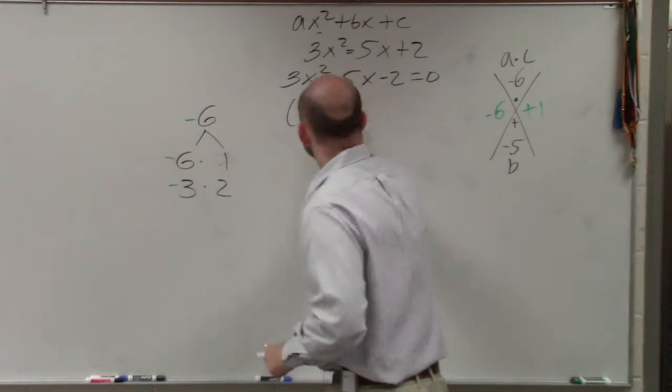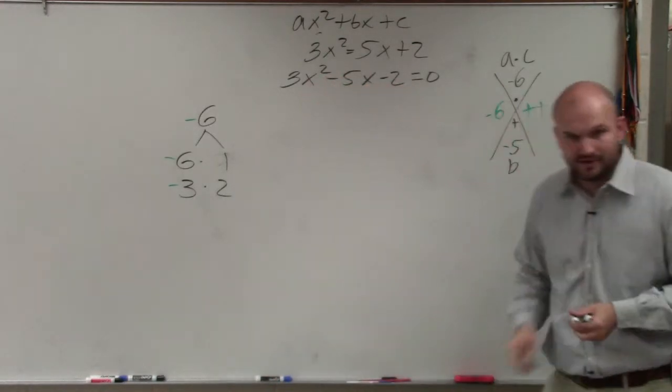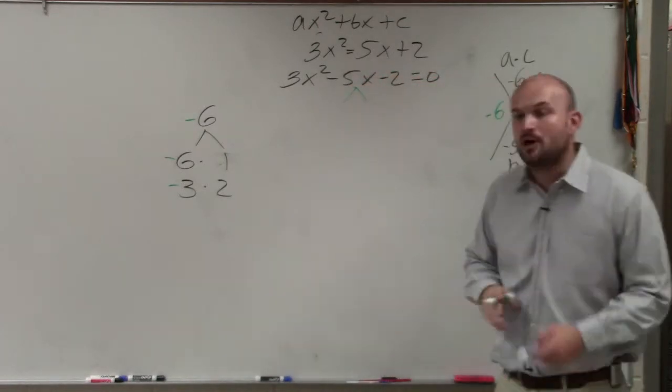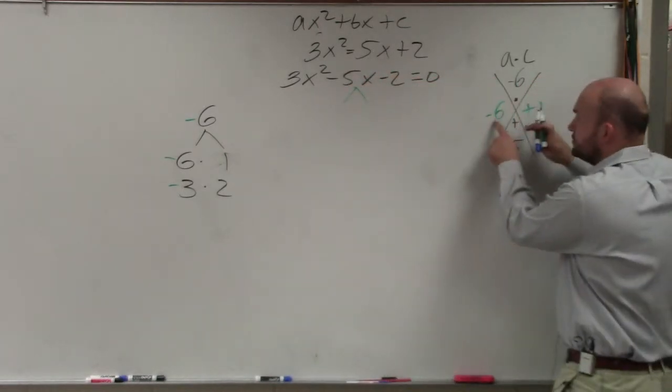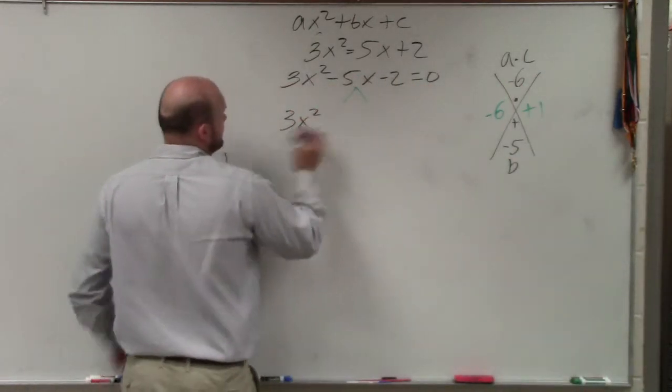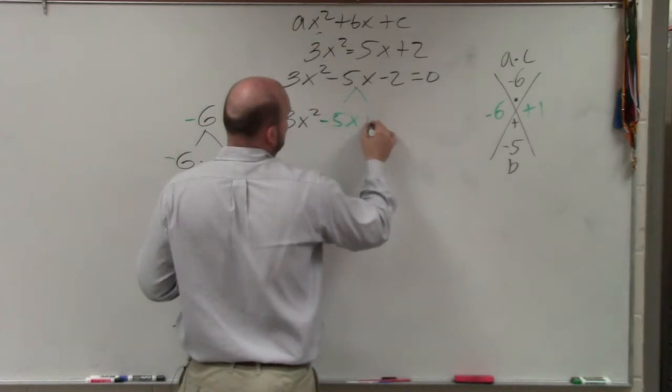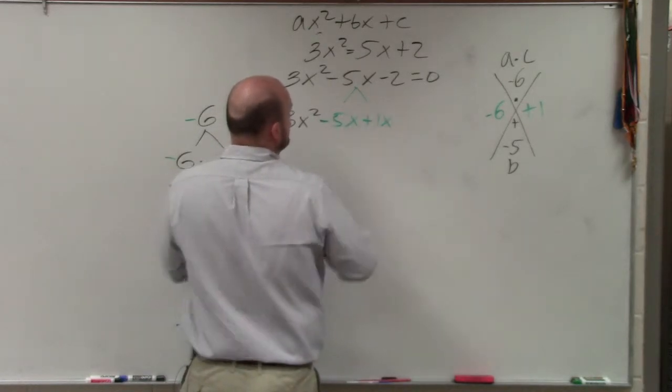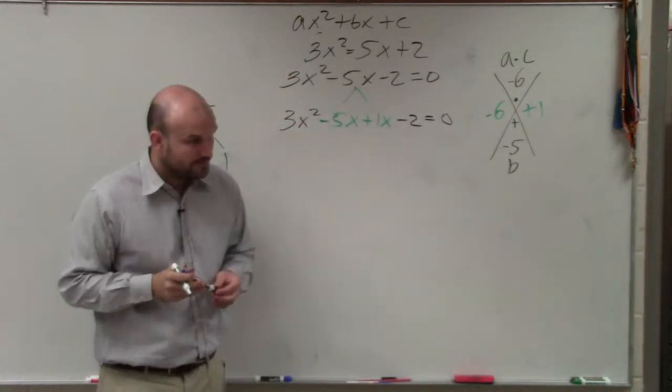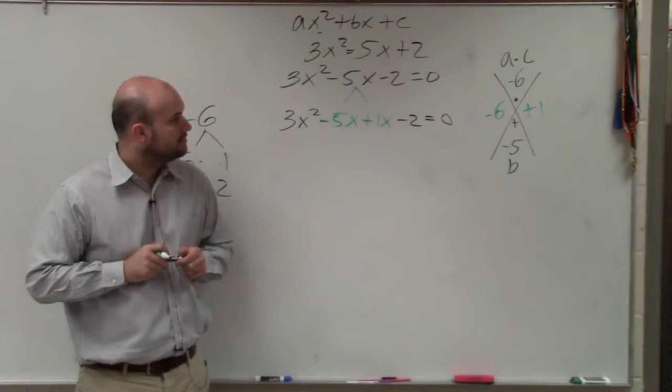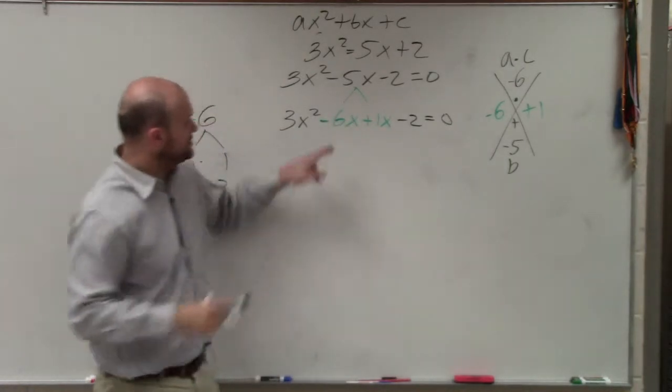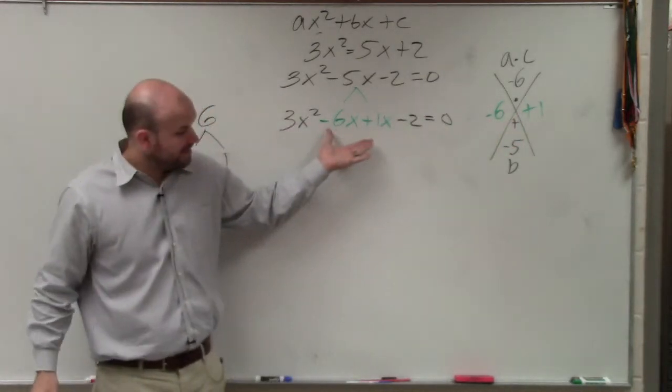So what we're going to do, there's many different ways to do this. And I have videos showing you how to do it if you want to watch. But the best thing I would tell you guys to do is to break apart the negative 5x using your negative 6 and 1. So we'd look like this, 3x squared, minus 5x becomes minus 6x plus 1x, minus 2, equals 0. So I'm just taking the values that I found here, rewriting them there.